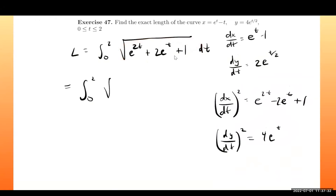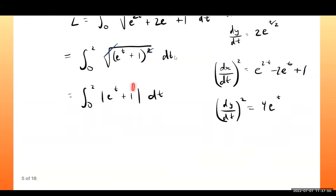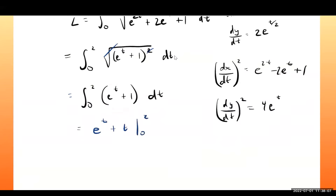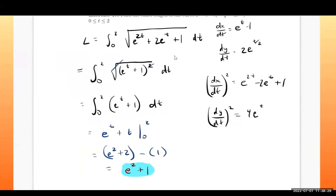The expression under the square root is a perfect square binomial, so the square root cancels and we get |e^t + 1|. Since the function is positive on [0, 2], we drop the absolute value. The antiderivative is e^t + t, evaluated from 0 to 2, giving e² + 2 − 1 = e² + 1 as the arc length.